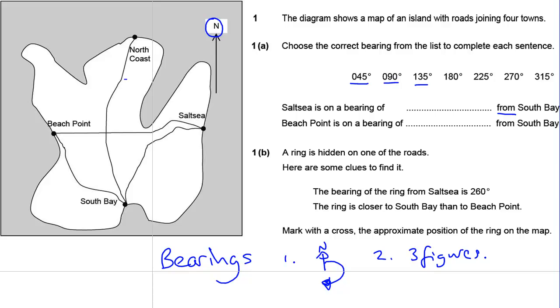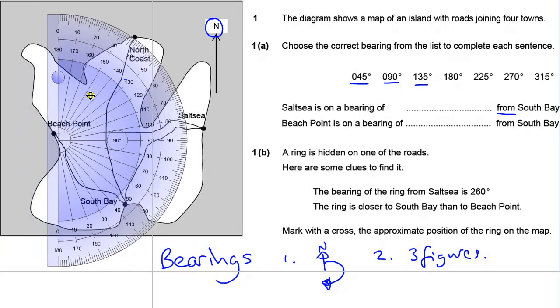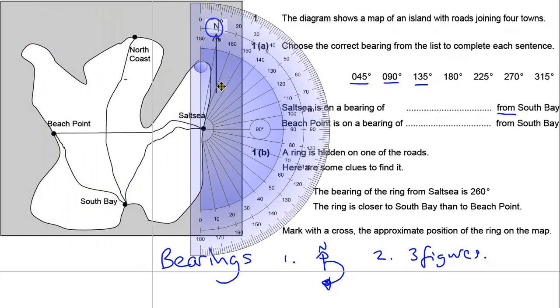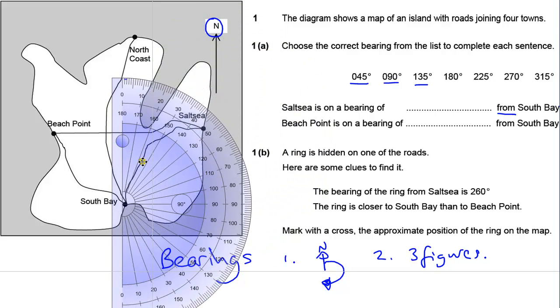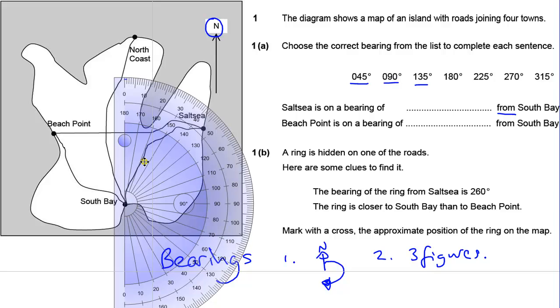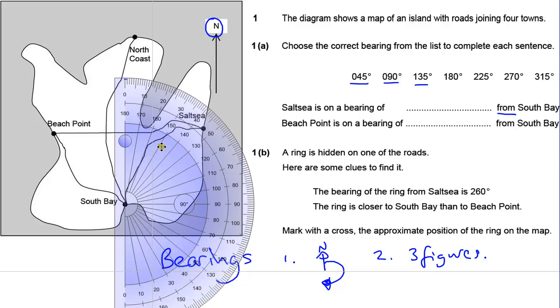So it's telling you where to measure your bearings from. When we get our protractor and put it on the screen, there's quite a big temptation to put it on Saltcea because that's the first word, but it's not. We must put our protractor centered on South Bay because that's where we're measuring the bearing from. And then we need to look on our scale from zero around to Saltcea, and we can see that is a bearing of 45. And we must remember three figures, so it would be 045.